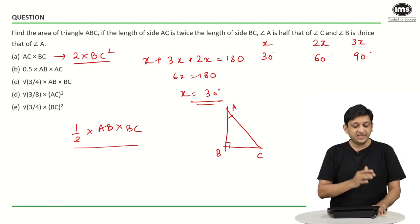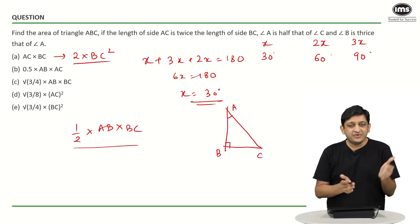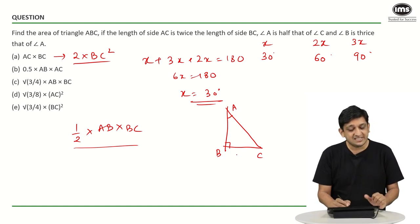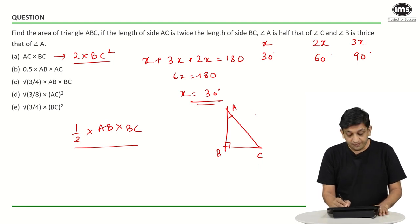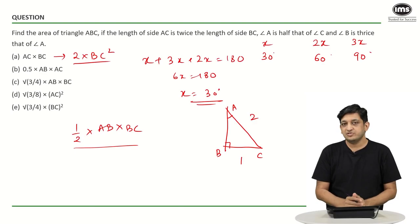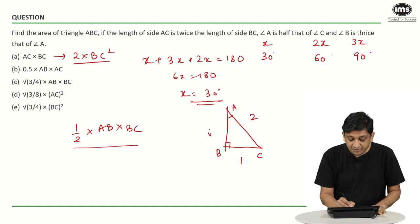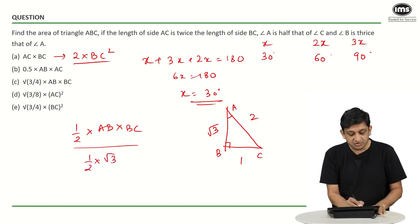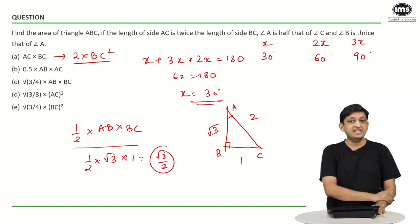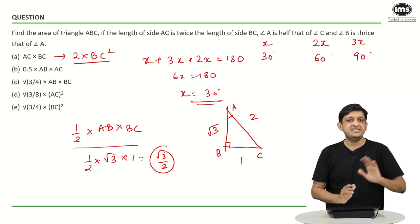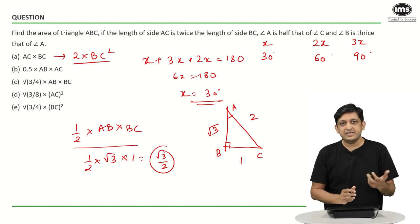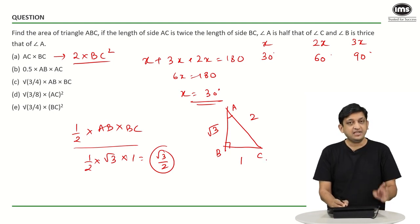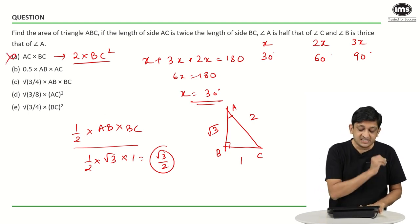Now we substitute values into each option. Option 1: AC into BC equals 2 into 1 equals 2 — not root 3 over 2, so option 1 is not the answer. Option 2: half into AB into AC equals half into root 3 into 2 equals root 3 — not our answer. Option 3: root of (3/4) into AB into BC equals root 3 over 2 into root 3 into 1 equals 3 over 2 — not our answer. Option 4: root of (3/8) into AC squared equals root 3 over 2 root 2 into 4, which simplifies to root 6 — not our answer.